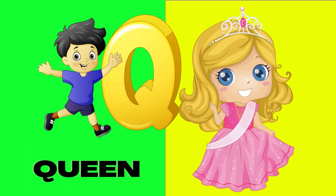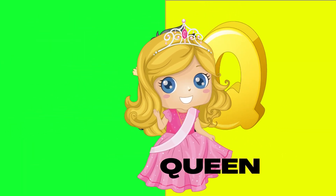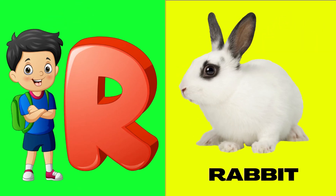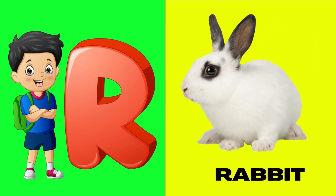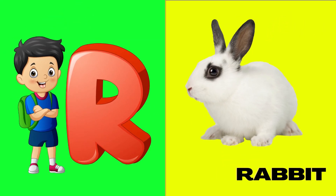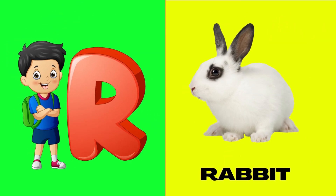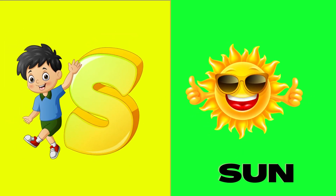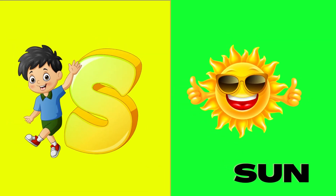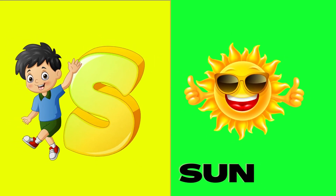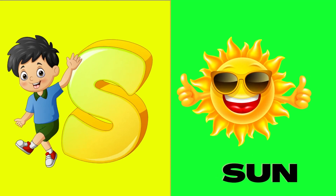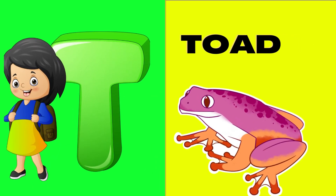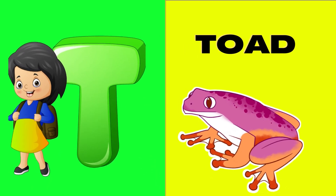Q is for queen, qu-qu-queen. R is for rabbit, r-r-rabbit. S is for sun, s-s-sun. T is for toad, t-t-toad.